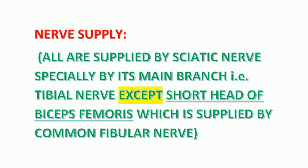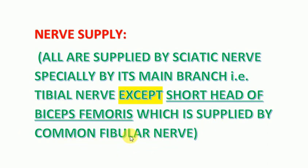Now let us talk about the nerve supply. All hamstring muscles are supplied by the sciatic nerve, specifically its main branch, the tibial nerve, except the short head of the biceps femoris, which is supplied by the common fibular nerve, also called the common peroneal nerve.